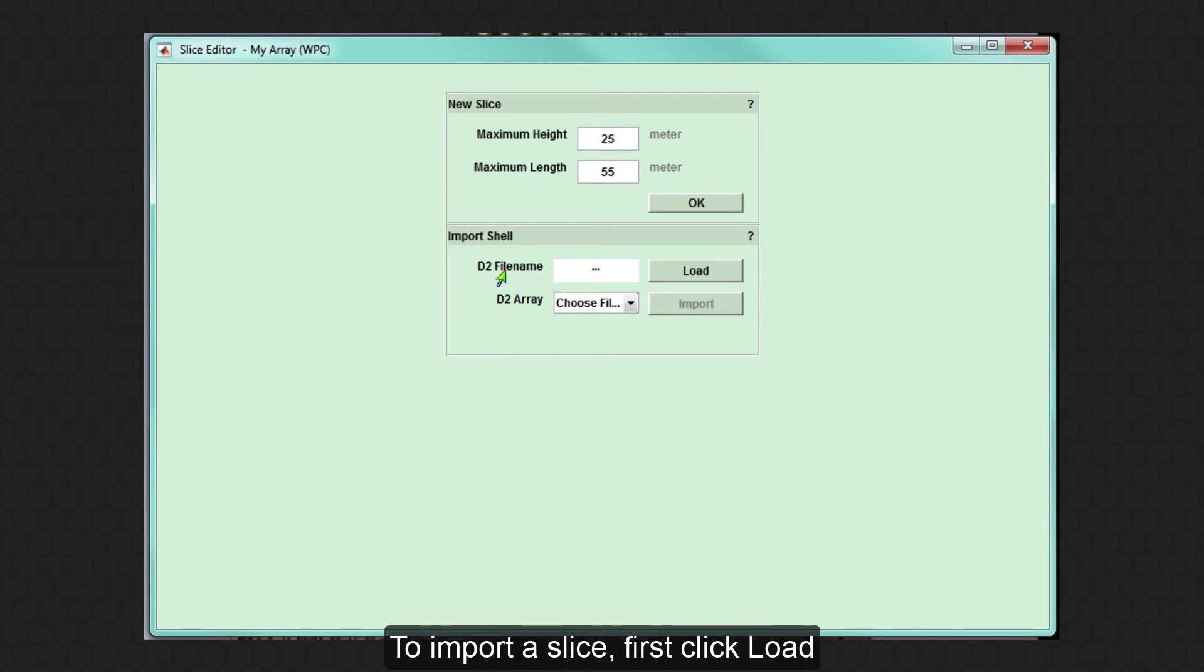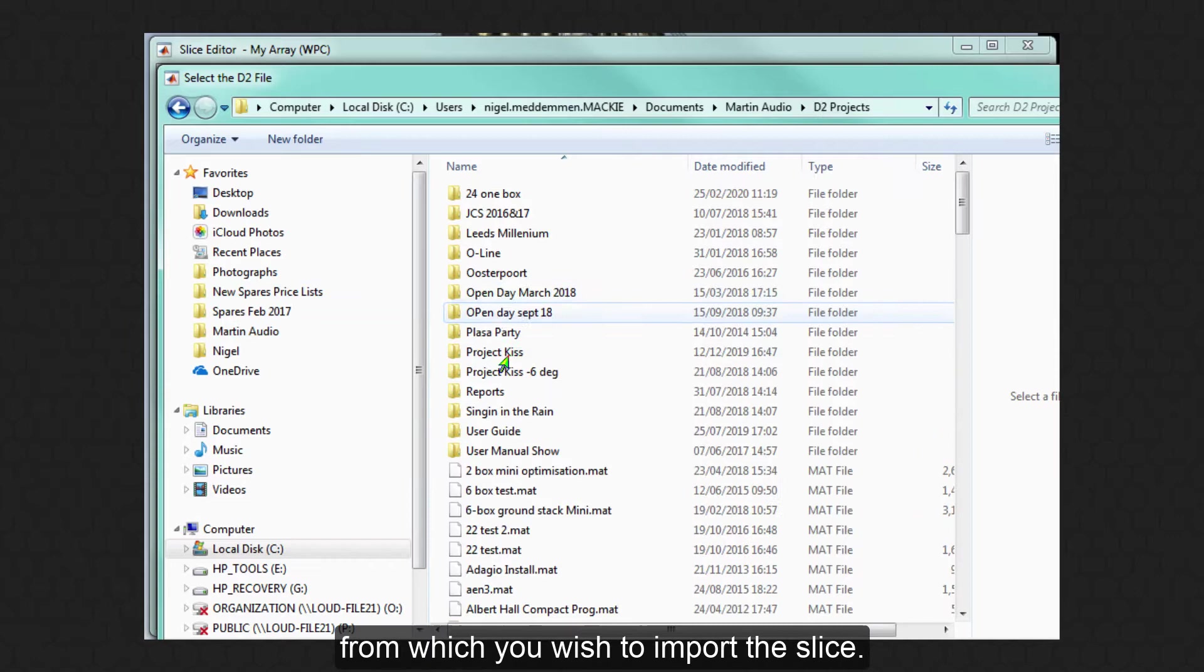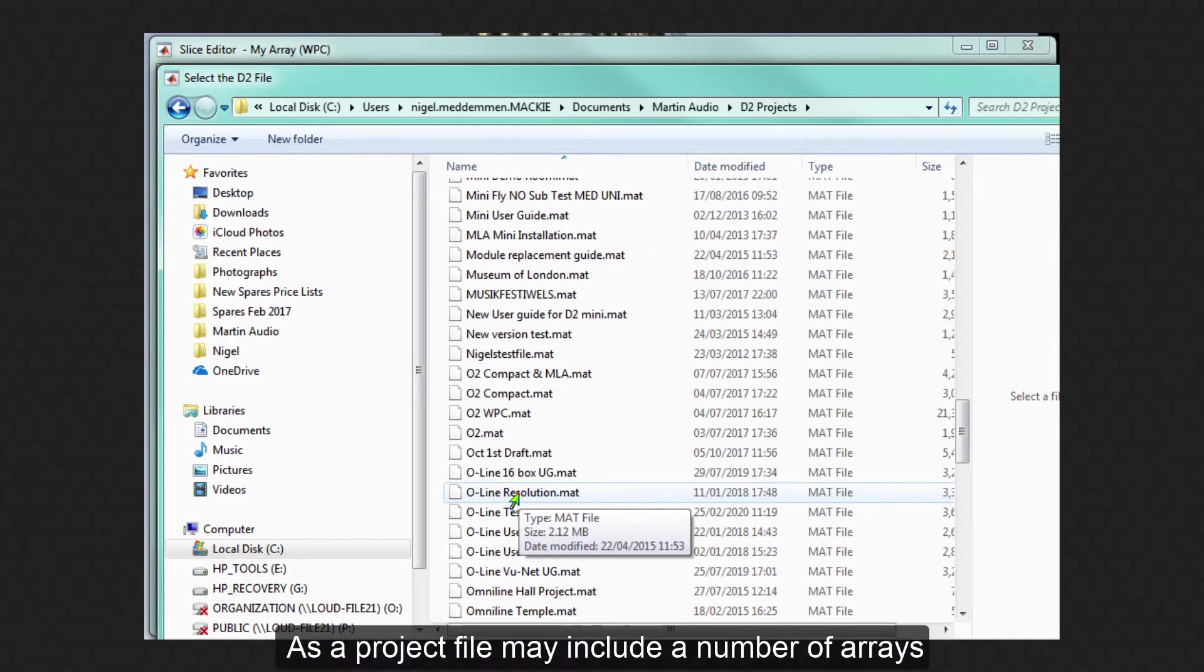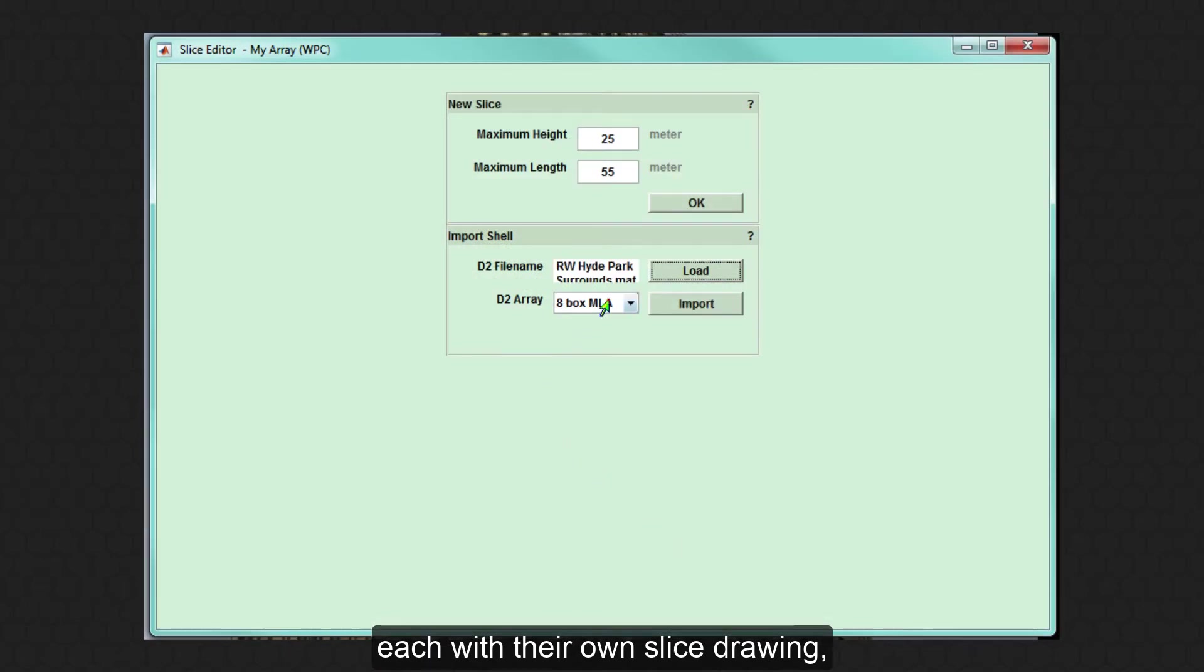To import a slice, first click load and navigate to the file from which you wish to import the slice. As a project file may include a number of arrays, each with their own slice drawing, use the dropdown to select which one you would like to use and click import.